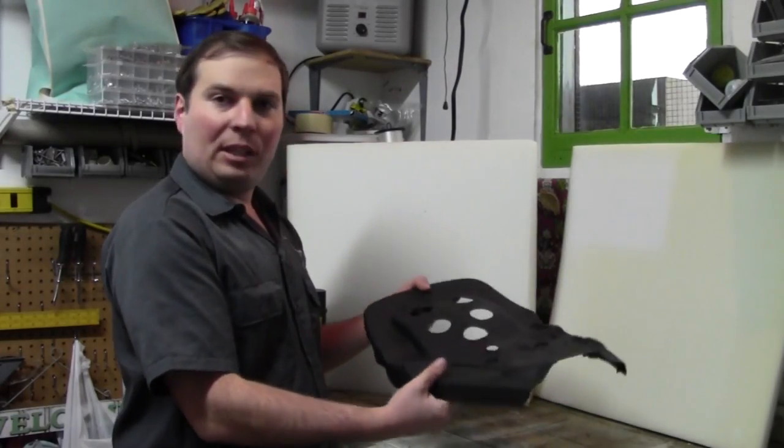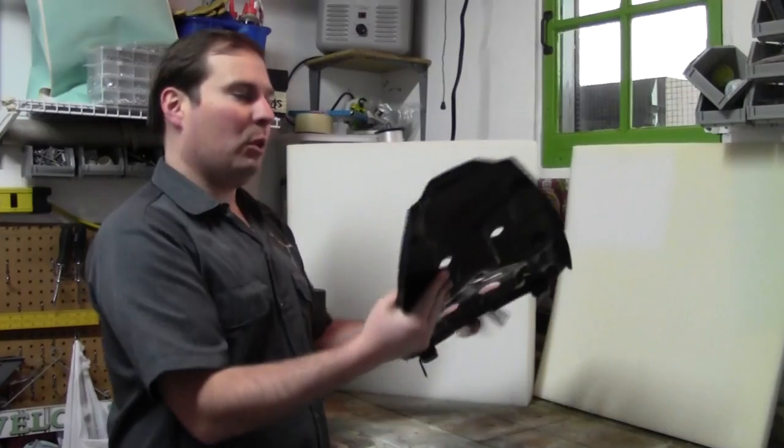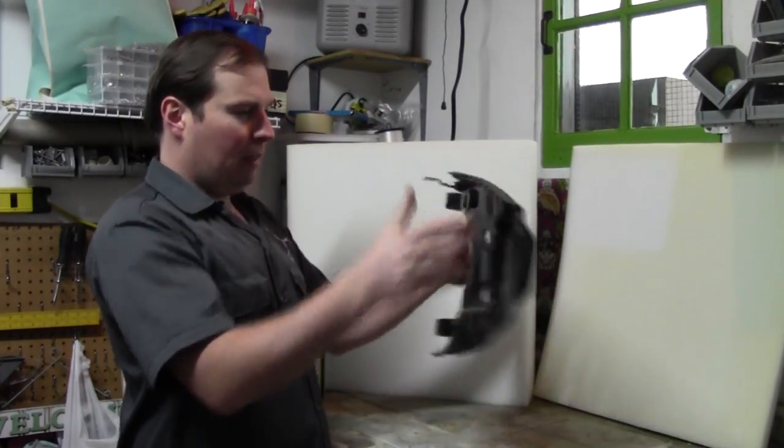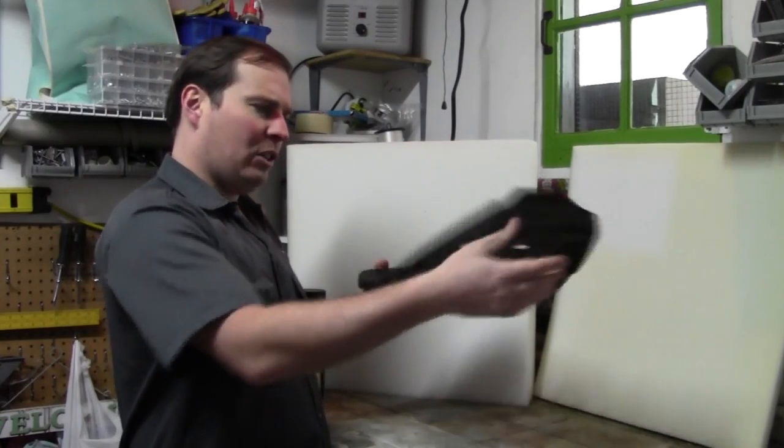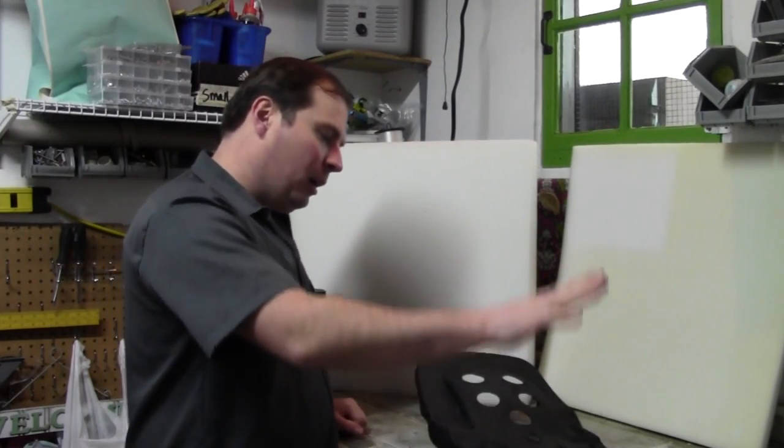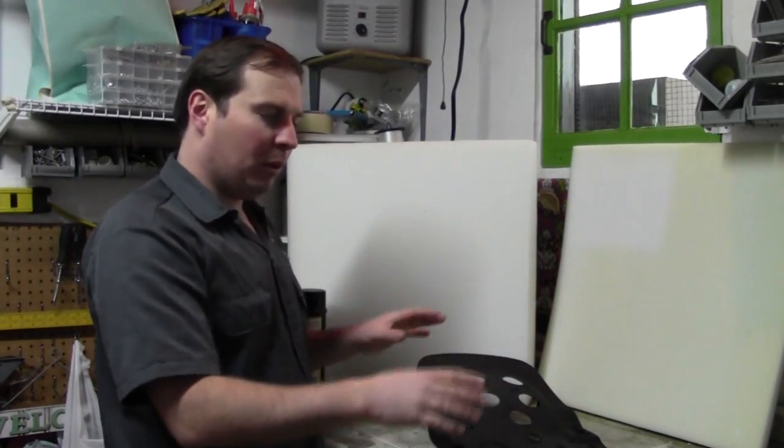Well, cleaned up our seat pan here. We've painted her all up with some rust blocking primer. It looks pretty good. Had to straighten it out just a little bit, and a good coat of primer on here. So we're ready to put some foam on here and rebuild the foam.